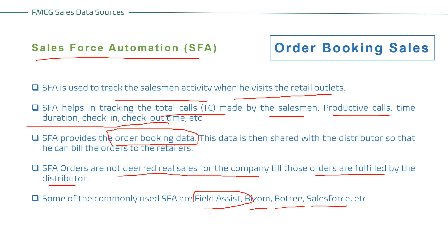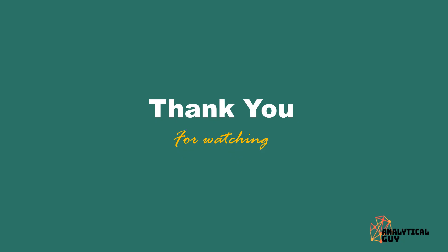So that's it for this video. I talked about ERP, DMS, and SFA — these three important data sources for measuring FMCG sales. If you have any doubts on this topic or any other FMCG-related topic, please comment and I'll definitely revert. Thanks a lot for watching!